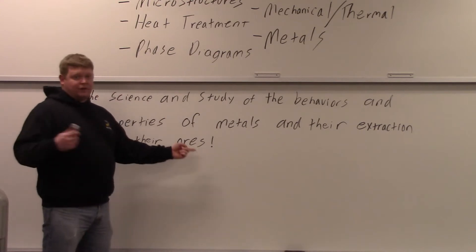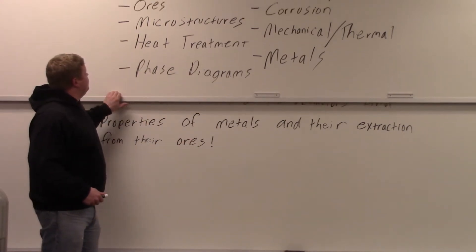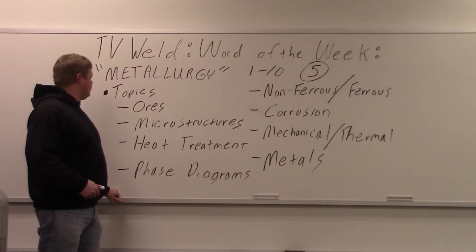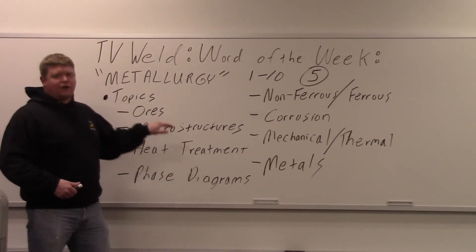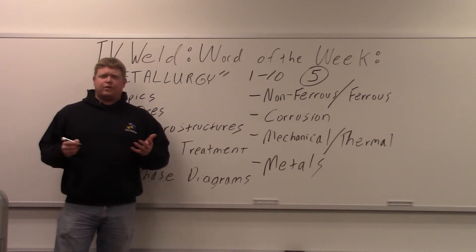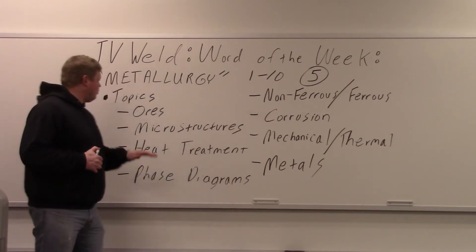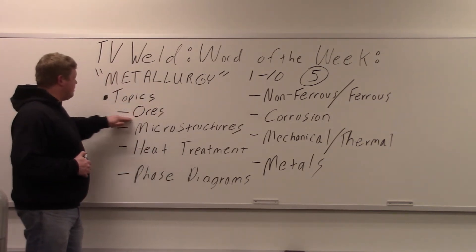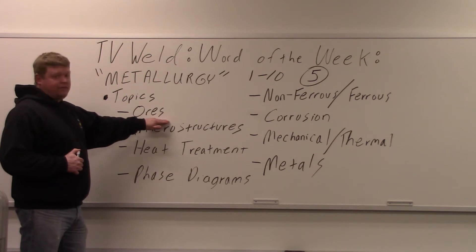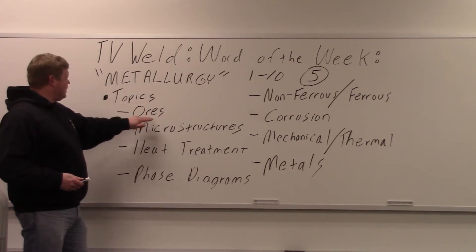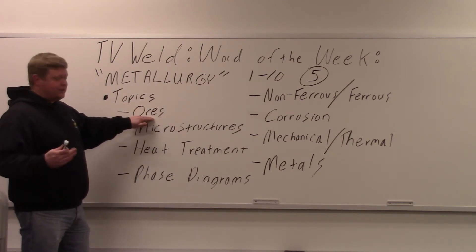Ores is in the definition of metallurgy and it's also the first part of the process of making metals. Ores are basically a rock that gets pulled from the earth that contains whatever metal you're trying to make into a usable shape. The big thing to remember is you're pulling material out from the ground and refining it through some kind of process to make usable materials.